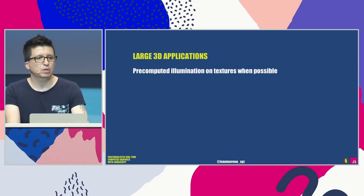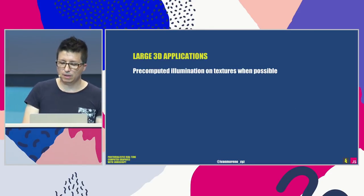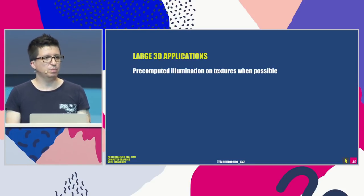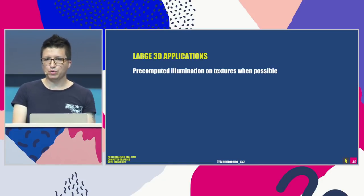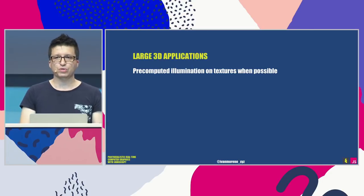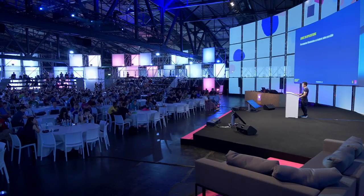Computed illumination baked on textures — known as baked illumination — is also a good performance tip. It's typically used in level design where the camera is not going to get very close to the displayed environment, and it's a great way to save resources that you can use in other areas of your application, like a product configurator where the object needs to look realistic.